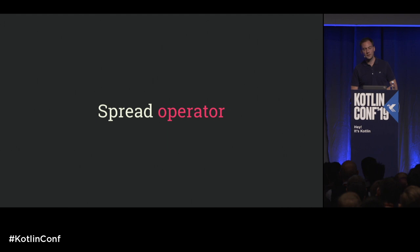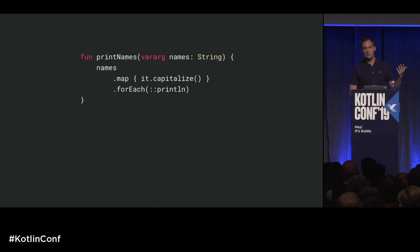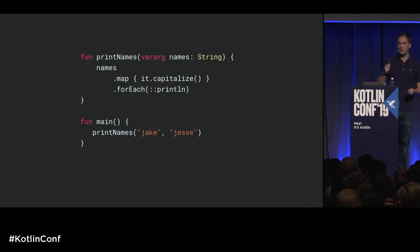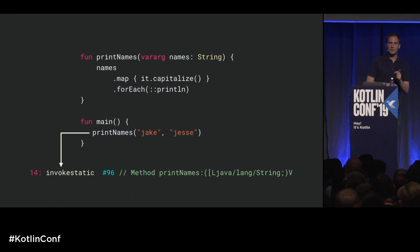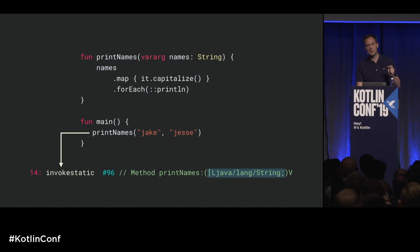The second feature is the spread operator, which is related to varargs. Here's a simple function that takes a variable number of String arguments, capitalizes every string, and prints them. You can pass multiple parameters, as many as you want. If you decompile the code, you see the printNames function becomes an invokestatic call, and looking at the signature comment, there's a square bracket at the beginning — meaning the function is expecting an array of strings. So every time you specify varargs, you're actually receiving an array, and the compiler will create an array on your behalf.